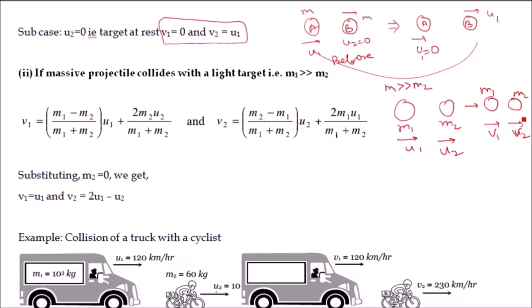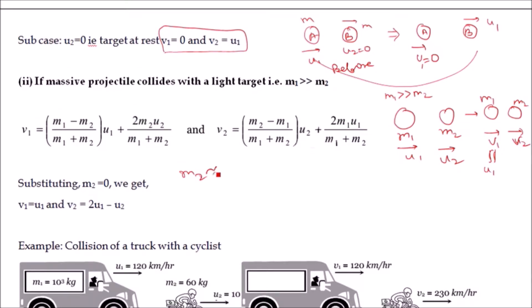It seems clear that if a heavy object collides with a light object, there is minimal impact on the heavy object, so the heavy object continues to move with the same velocity. We may say that v1 must be approximately equal to u1. From the formula, if we put m2 approximately equal to zero, then v1 equals m1/m1 times u1 plus zero, so v1 equals u1, which matches our intuition.